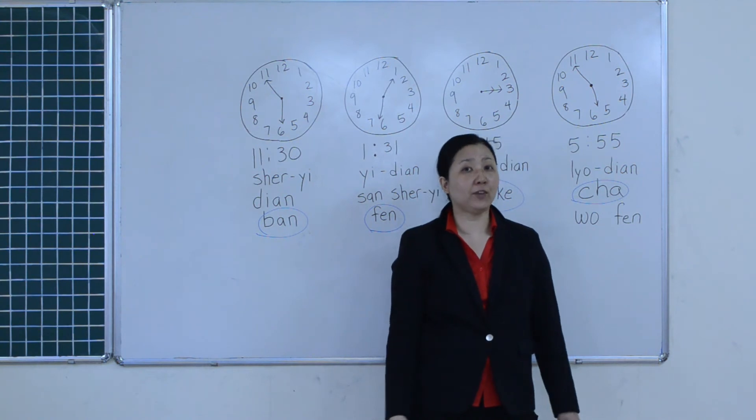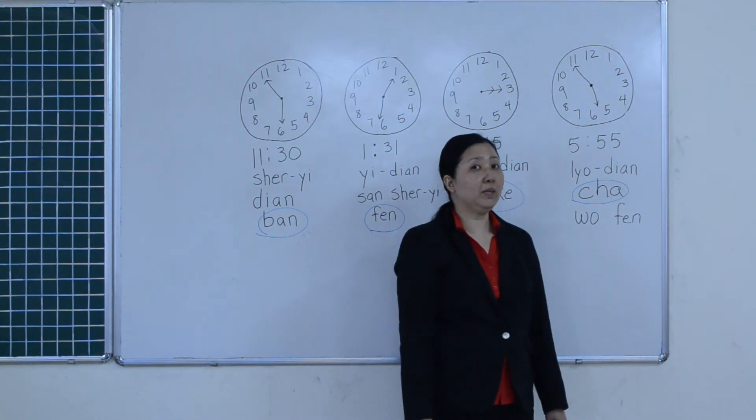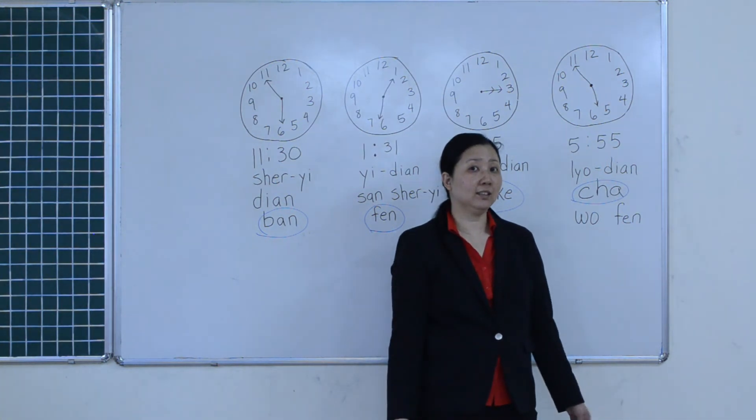So in order to say 5:55, you say 六点, meaning 6, 差五分. That means 5:55 is missing 5 minutes.